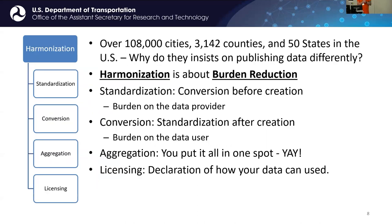Harmonization: there are over 108,000 cities in the US, 3,142 counties in 50 states, and they all insist on collecting and publishing data. If you have similar data and want it to work together, you have to ensure it's in a compatible format. Standardization addresses that conversion and formatting process. Standardization before creation places the burden on the data provider; conversion after creation places the burden on the data user — so it's easier to make that conversion up front. Aggregation creates value by putting everything in one spot. Licensing means declaring how your data can be used.